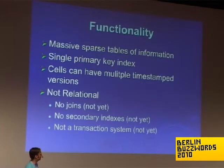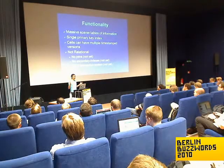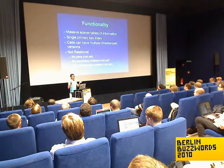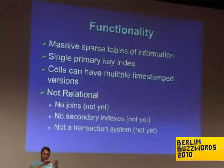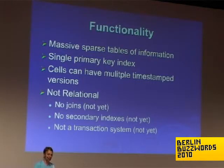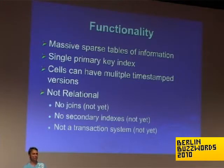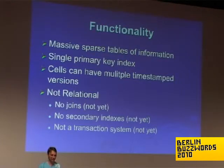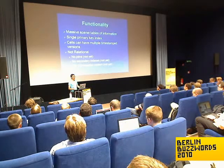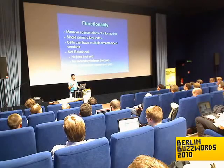So what does Hypertable offer you? It gives you the ability to create and manage massive or sparse tables of information. By sparse, I mean one row can have literally a million columns, and the next row can have two columns, and that's stored very efficiently. Each table is sorted by a single primary key index, and each cell in the table can have multiple time-stamped revisions, so it's well-suited for applications that do versioning or historical archiving. What is it not? It's not a relational database — currently we don't support joins, secondary indexes, or transactions. They're on the roadmap, but we don't support them now.